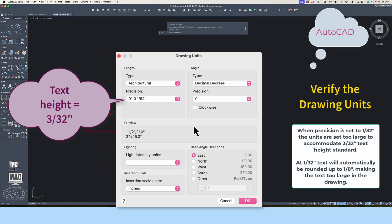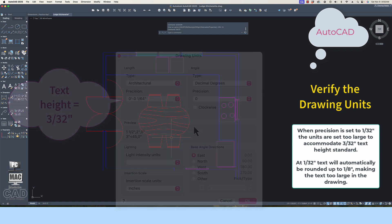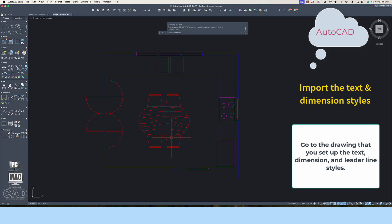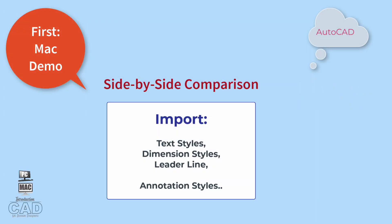Make sure that the drawing units in this example match the settings in the file you are evaluating. Pick the OK button and move on to the next step, which is to import the aligned dimension styles and the formatted leader line style. The following demonstration will be a side-by-side comparison of the process for importing text styles, dimension styles, and leader line annotation styles.